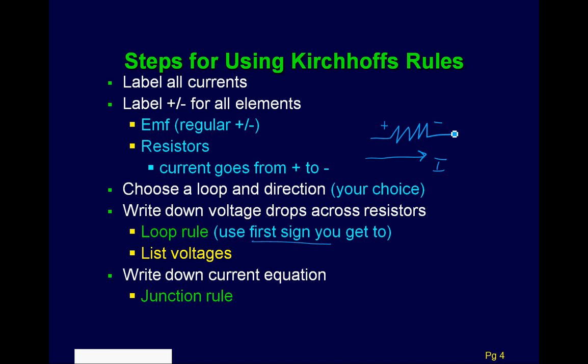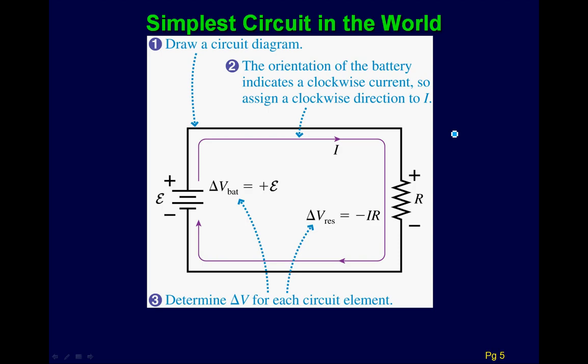Let's show how this works starting with the simplest circuit. The person already guessed the current goes clockwise. With currents, you don't always know the direction — you just guess, and at the end the current will be positive or negative. If you were wrong, it will be negative, and that's okay. Because the current goes this way, the resistor is set up with positive and negative accordingly.